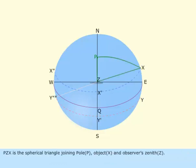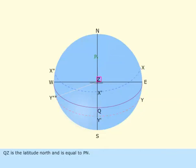PZX is the spherical triangle joining pole P, object X, and observer's zenith Z. QZ is the latitude north and is equal to PN.